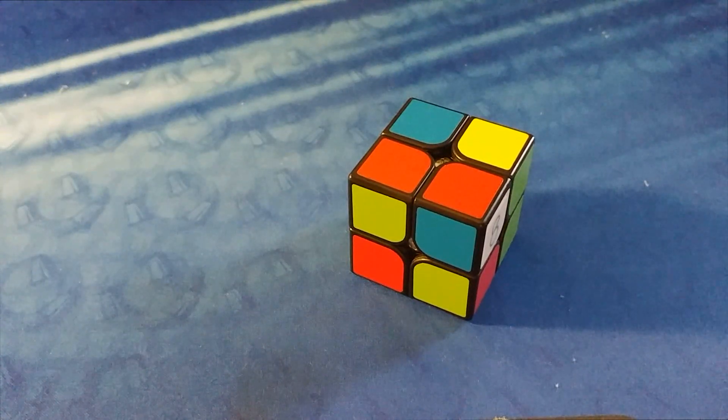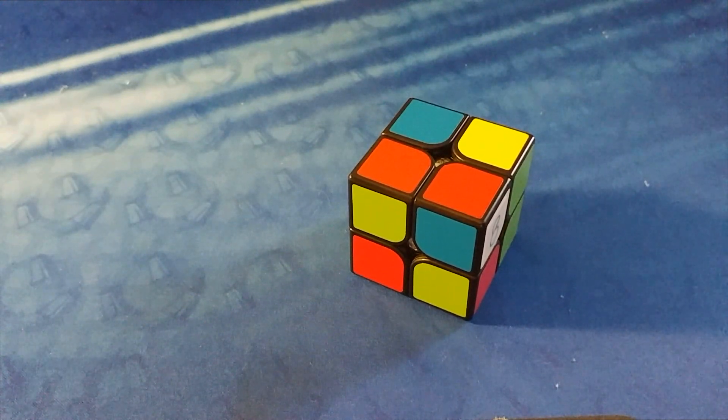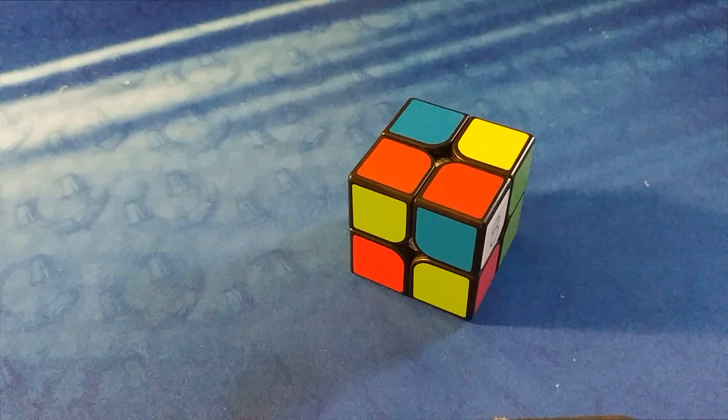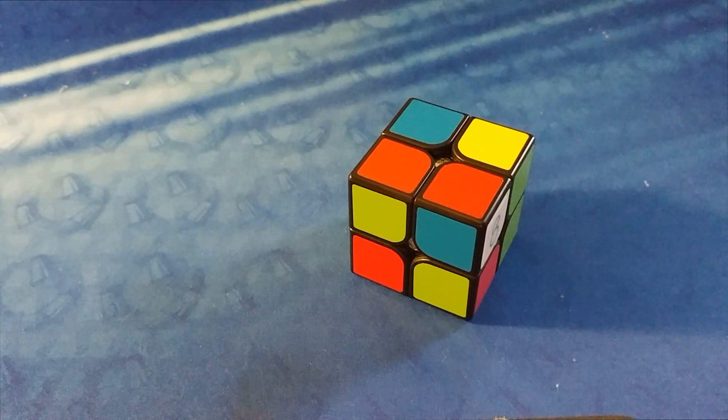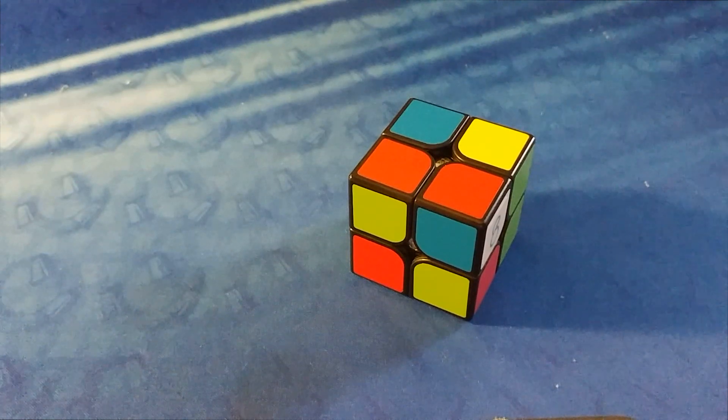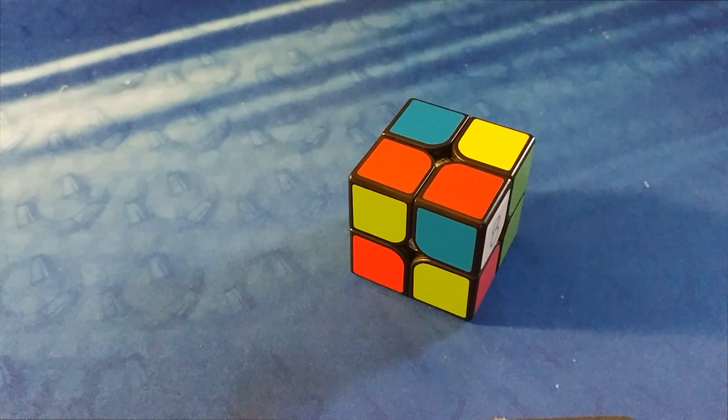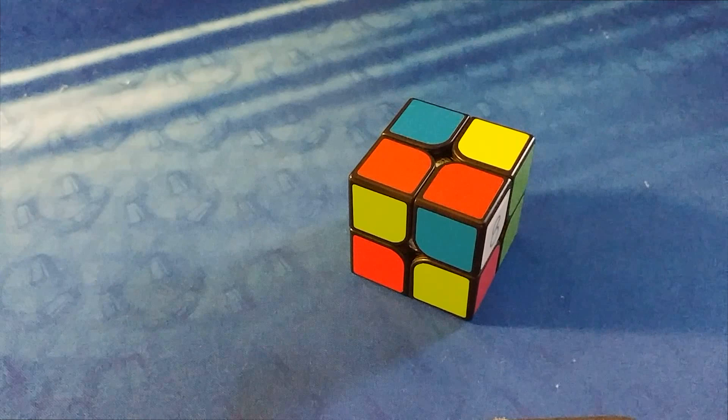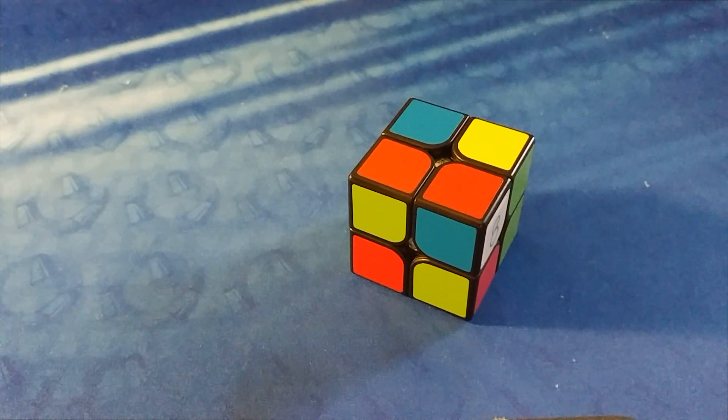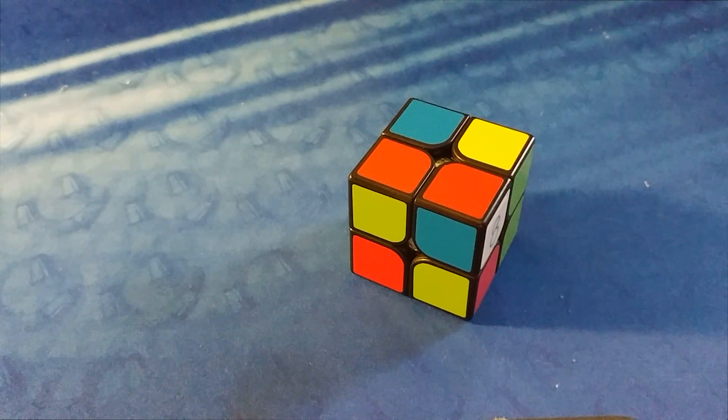All right, so now that you know how to solve the 2x2, I'm going to be doing one example solve, but one thing I forgot to mention when selling how to get faster is you need to work on your finger tricks. Good finger tricks are the most important thing in getting faster at 2x2, at least in my opinion, because you can have amazing OLLs, but if you don't have good finger tricks to perform them, then you're not going to get that fast. I'm not all that fast on 2x2, but I'm okay, so I'm just going to do one example solve, and then that'll be it.